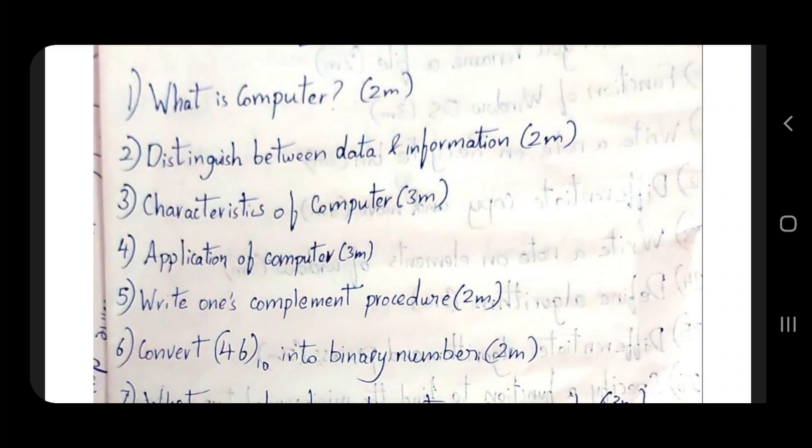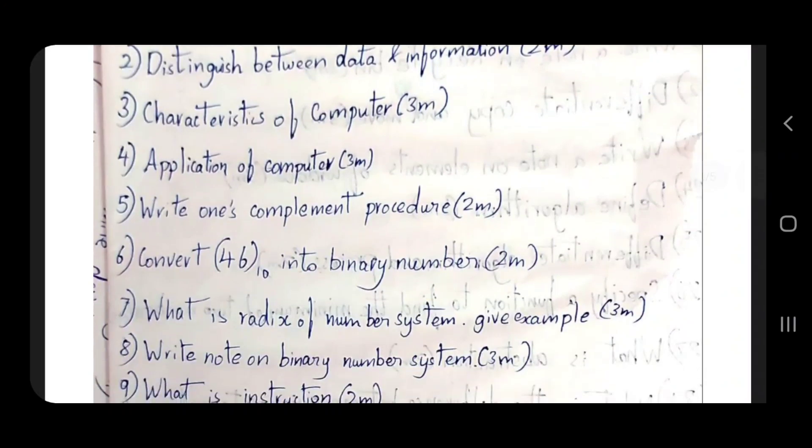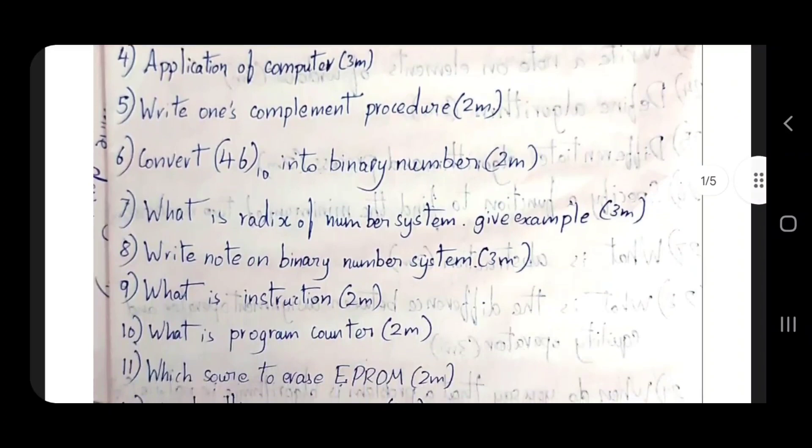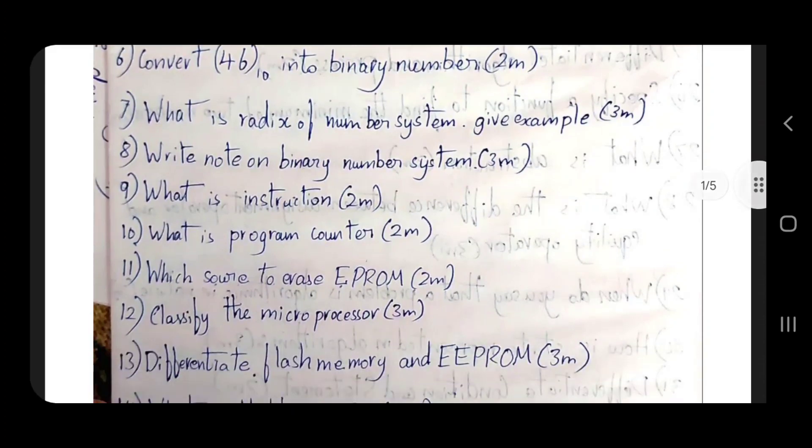Application of computer, 3 mark. Write one's complement procedure, 2 mark. Convert 46 base 10 into binary number. What is radix number system? Write a note on binary number system, 3 mark. This is the second unit chapter.